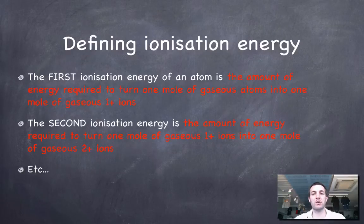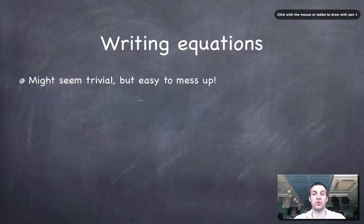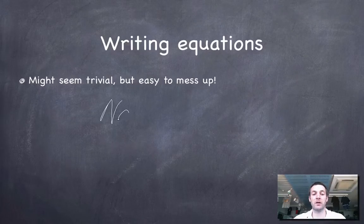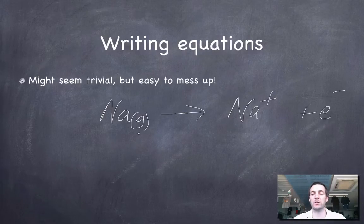Now, if we realize what the definitions are, then we should be able to write equations. However, it's quite easy to mess it up if you don't know your definitions very well. For example, if I was asked to write an equation for the first ionization of sodium, I might write something like: sodium turns into sodium plus and gives up an electron. That's good because we're removing an electron from a sodium atom. However, what we haven't made clear in our equation is the fact that we're starting with a gas and we're ending up with a gas.